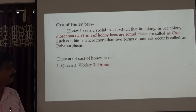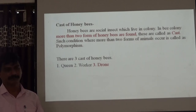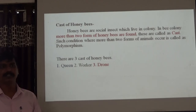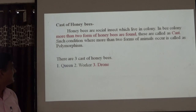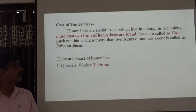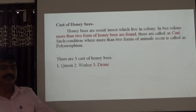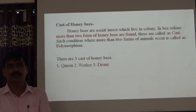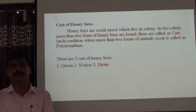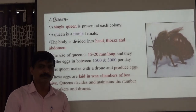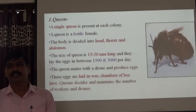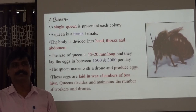This is also part of the social instinct. In a bee colony, more than two forms of honeybees are found — these are called castes. Two or more types of bees are present in the hive or colony. Such a condition where more than two forms of animals occur is called polymorphism. The three types of castes are: worker bee, drone bee, and queen bee.